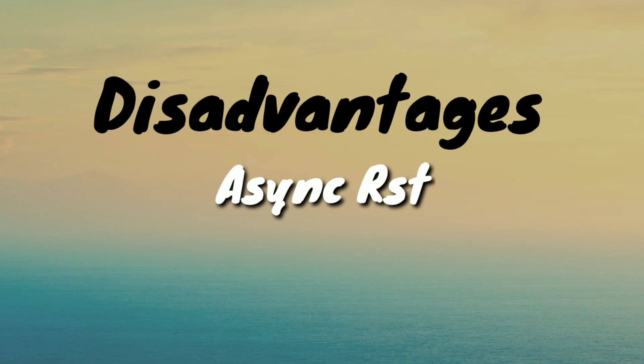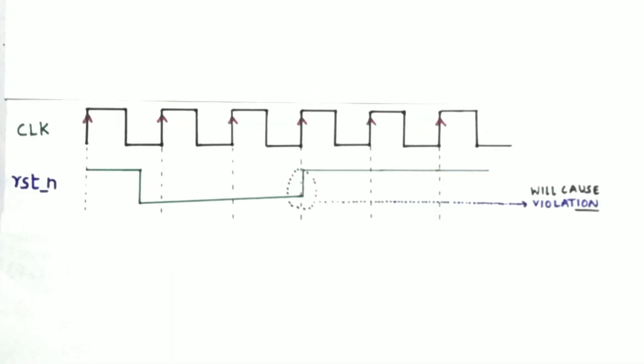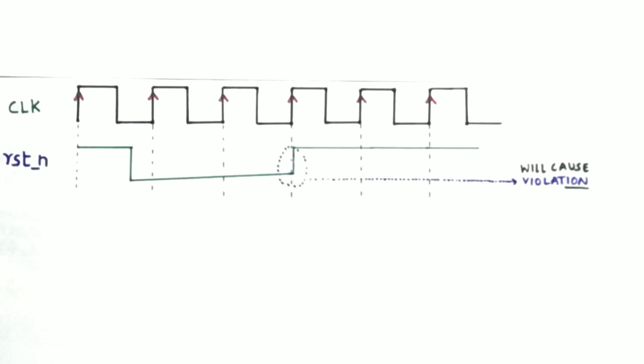So this is clock and this is reset, and this is an asynchronous reset active low. When we apply a low as reset input, then the output will become zero at this point, but that is fine. When we remove the reset near the clock edge, there is a possibility of getting into a setup time violation or hold time violation.